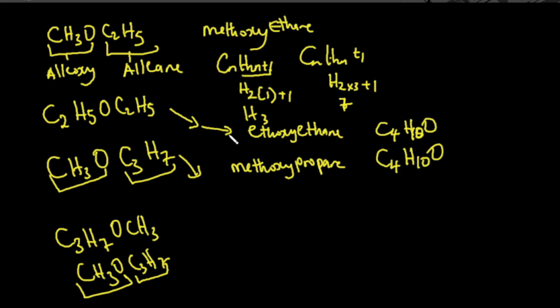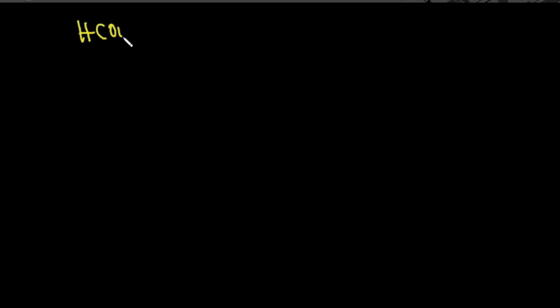Another group of compounds that can exhibit metamerism is esters. For esters, the process is practically the same. Esters that can exhibit metamerism must have at least three carbon atoms, meaning methanoates cannot exhibit metamerism. We can consider ethyl methanoate: HCOO-C₂H₅.